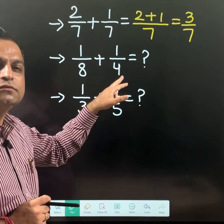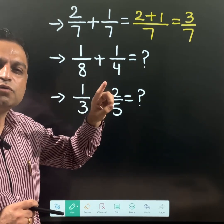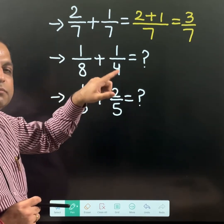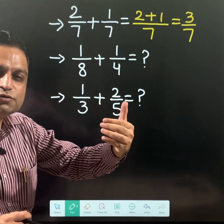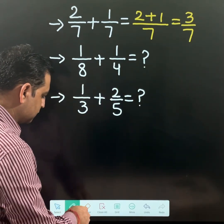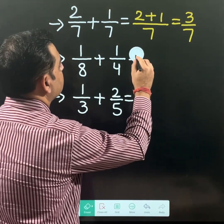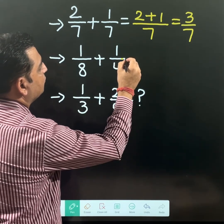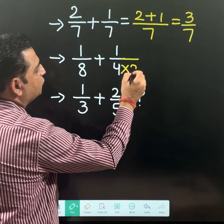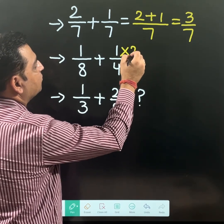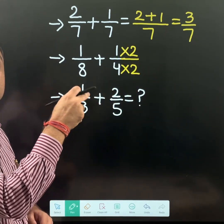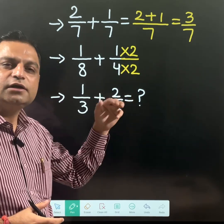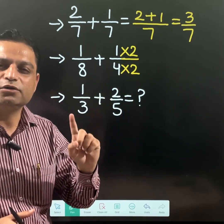This is already 8, no need to do anything. This is 4. How can I make this 4 as 8? That is the challenge, right? 4 can be made 8 by multiplying with 2. I can multiply this 4 by 2, but at the same time I will have to multiply the numerator also by 2 because actually I am writing an equivalent fraction to make the denominator 8.